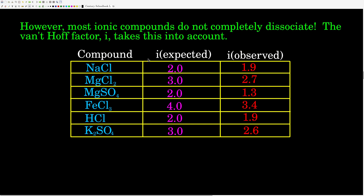The Van't Hoff factor takes into account the fact that most ionic compounds do not actually completely dissociate. In this table, the right-hand column in red shows the Van't Hoff factors for these compounds — you do not need to memorize these; they'll be given to you. When calculating the mole fraction using Raoult's Law, the denominator includes the moles of the solvent plus all the moles of total particles in solution. For example, if we dissolve one mole of sodium chloride, we'd expect two moles of particles, but we actually get 1.9 moles. So in the denominator of the mole fraction of the solvent, we'd add moles of water plus 1.9 moles of solute particles.